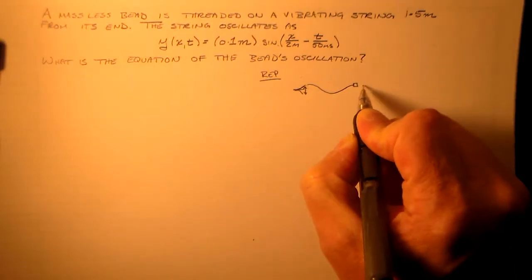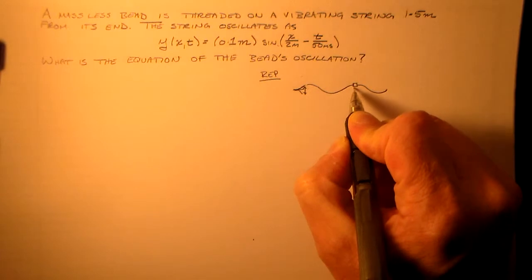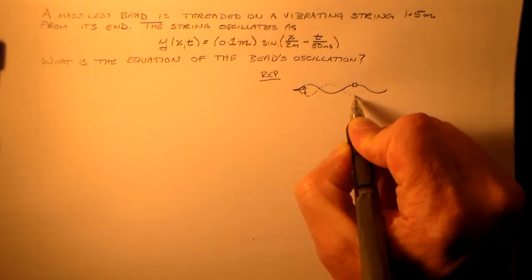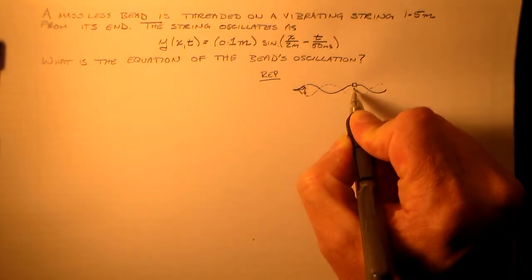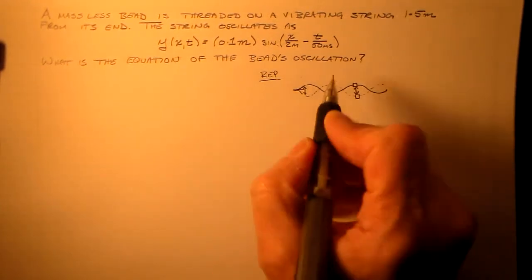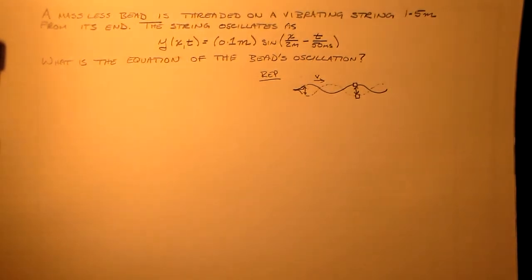And then at 1.5 meters, the bead here - the string has a bead on it, and that's going to go up and down like that. This is not a standing wave. This thing's moving along at some speed v. That is not important today.